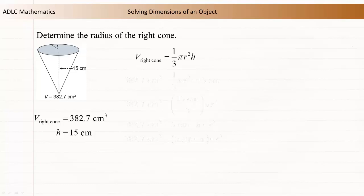The volume formula for a cone is V equals one-third pi r squared times height. Substitute the values into the formula.